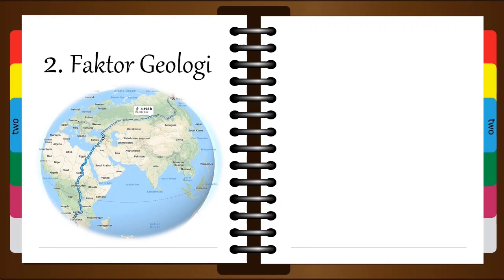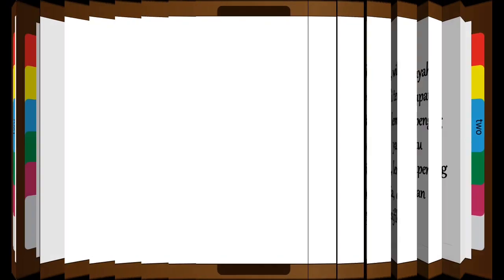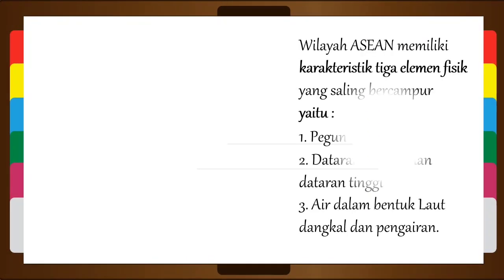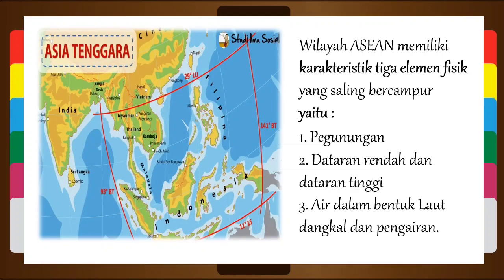Yang kedua, faktor geologi. Secara geologis, wilayah ASEAN menjadi tempat pertemuan tiga lempeng utama bumi, yaitu lempeng Eurasia, lempeng India-Australia, dan lempeng Pasifik. Wilayah ASEAN memiliki karakteristik tiga elemen fisik yang saling bercampur, yaitu yang pertama pegunungan, yang kedua dataran rendah dan dataran tinggi, dan untuk yang ketiga air dalam bentuk laut dangkal dan pengairan.